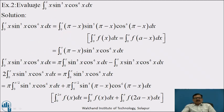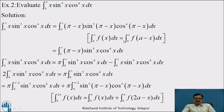Now we will see one more example: evaluate the integral from 0 to π of x · sin⁵x · cos⁶x dx. To express this in terms of the trigonometric form of Beta Function, we apply the fundamental theorem: integration from 0 to a of f(x) dx equals integration from 0 to a of f(a-x) dx, with a = π. So sin(π - x) = sinx and cos(π - x) = -cosx, giving cos⁶x since the power is even.